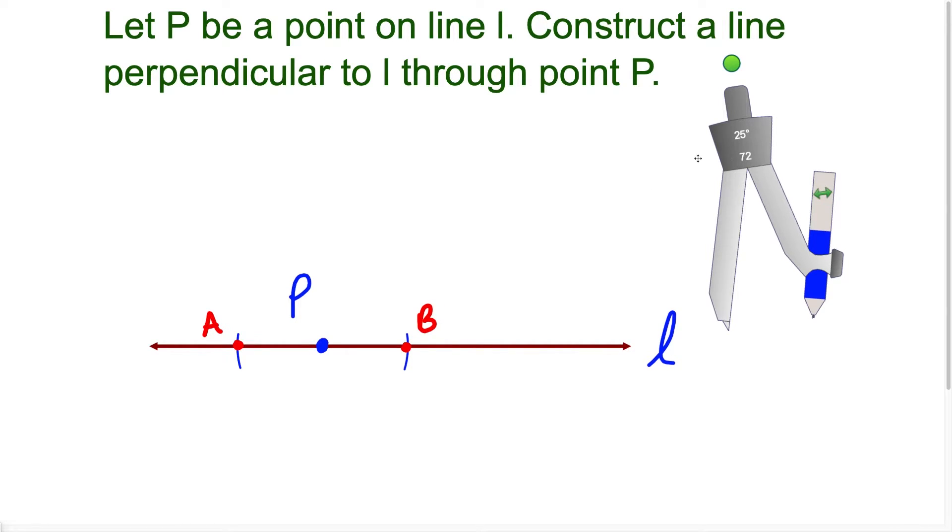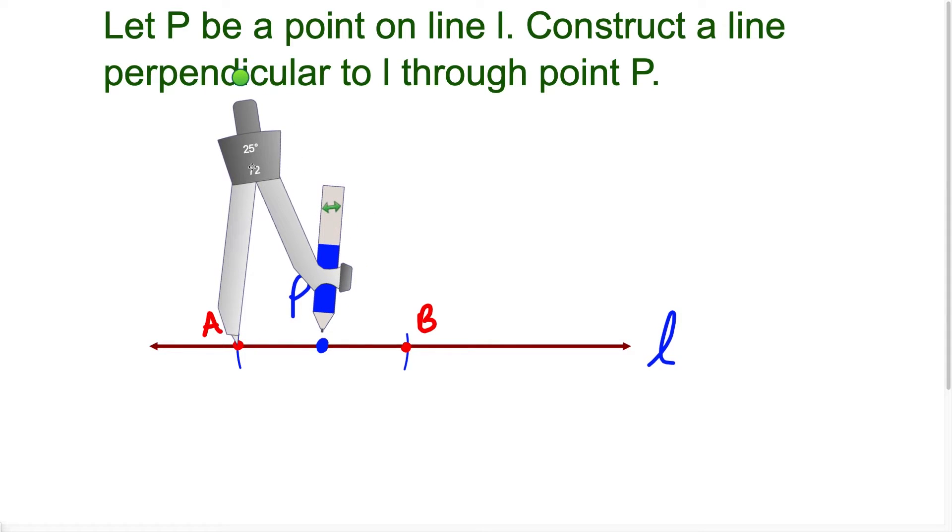So essentially what we're doing is we're going to construct a perpendicular bisector of line segment AB.